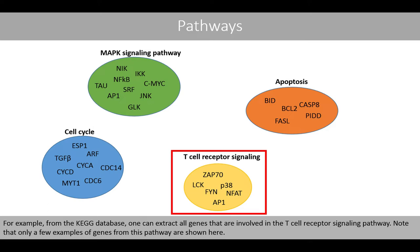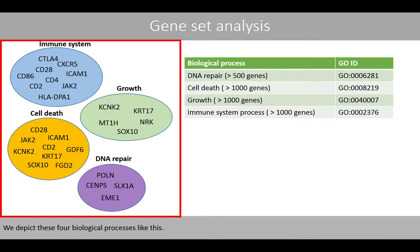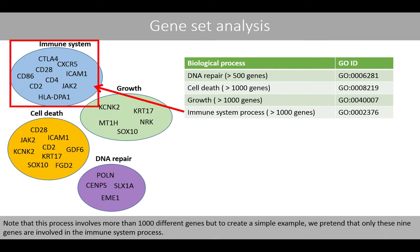Note that only a few examples of genes from this pathway are shown here. To understand gene set analysis, let's create a simple example. Suppose that these four biological processes were the only processes used in our analysis. We depict these four biological processes like this. Note that this process involves more than a thousand different genes, but to create a simple example, we pretend that only these nine genes are involved in the immune system process.